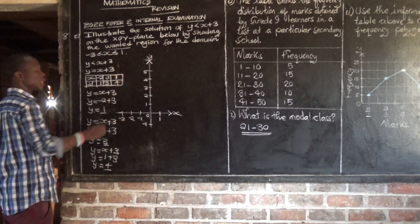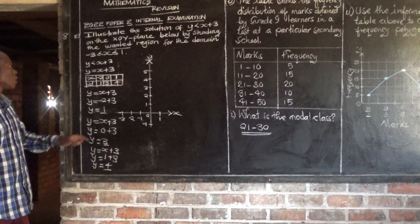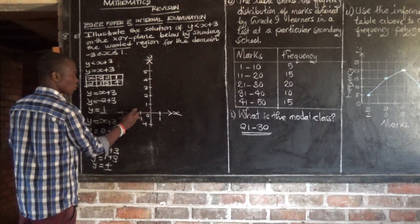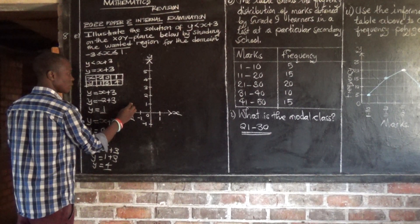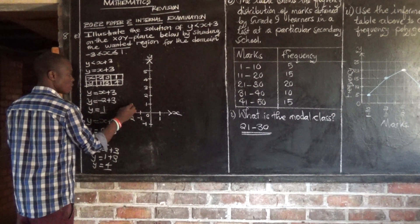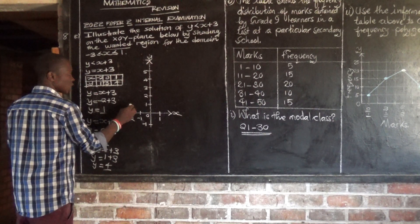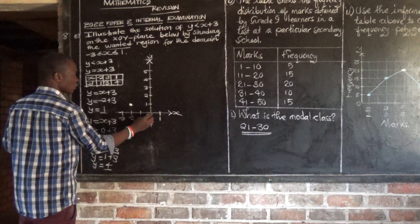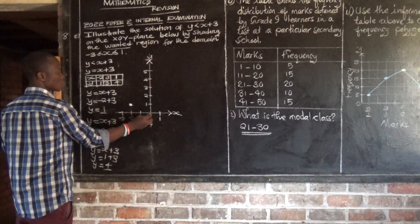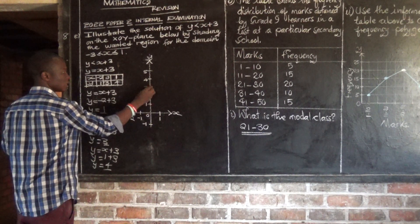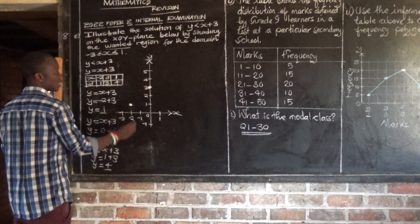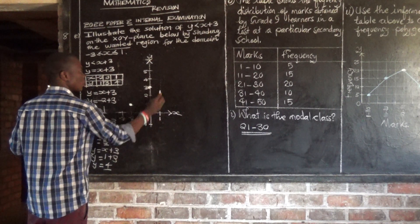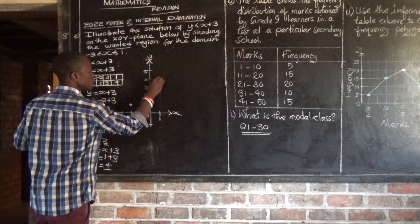Now put these coordinates on the plane. The first one is negative 2, 1 — that's negative 2 on the x-axis, comma 1 on the y-axis. Then 0, 3. Then 1, 4. So 1, 4 is here. Now join these points to come up with a line.